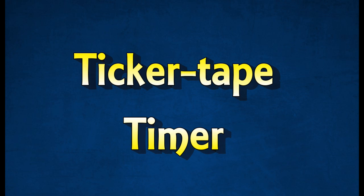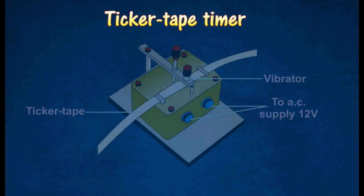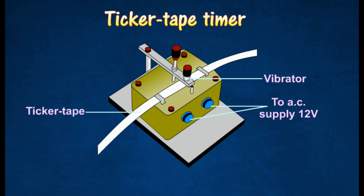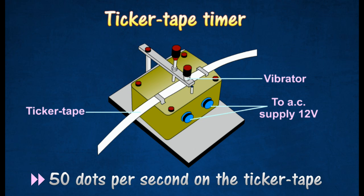Ticker Tape Timer. The velocity and acceleration of an object can be measured using a Ticker Tape Timer. The Ticker Tape Timer consists of a steel strip that vibrates 50 times a second. This enables the vibrating steel strip to make 50 dots per second on the ticker tape being pulled through it.